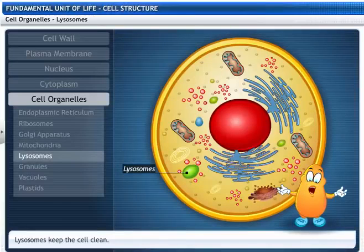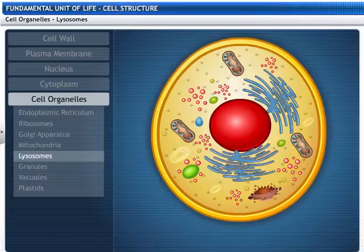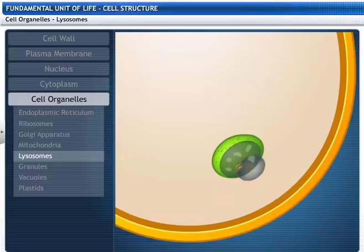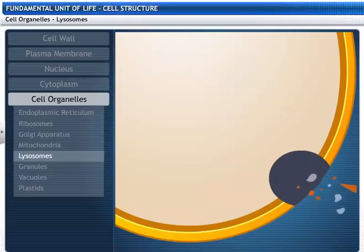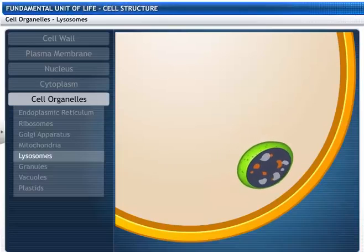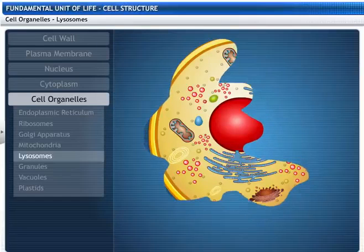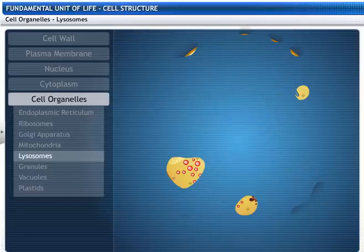These are lysosomes that keep the life factory clean. Usually absent in plants but present in animals, they contain 40 different types of digestive enzymes. These enzymes destroy injured or old organelles and foreign substances like bacteria, and leave the destroyed contents outside the cell. Interestingly, lysosomes are also known as suicide bags — when the cell gets damaged, the lysosome may burst and its enzymes may digest the cell itself.